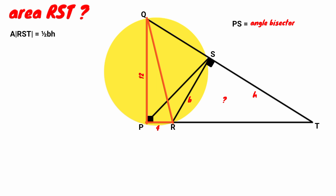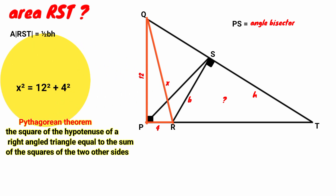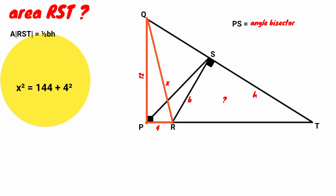We use the Pythagorean theorem on it. The Pythagorean theorem states that the square of the length of the hypotenuse of a right angle triangle is equal to the sum of the squares of the lengths of the two other sides. The hypotenuse is the side facing the right angle. Assume its length to be X. So by Pythagoras: X² = 12² + 4². That gives 144 + 16 = 160, so X² = 160.